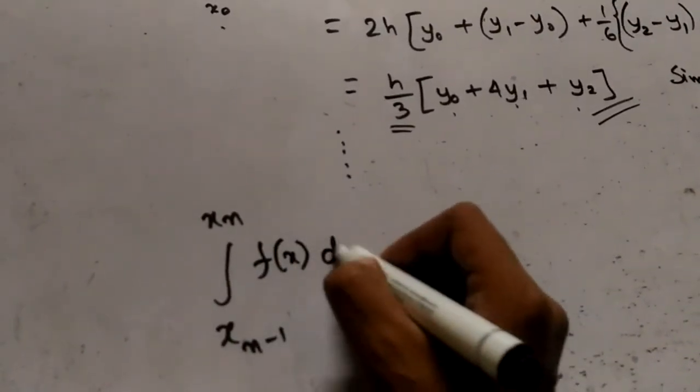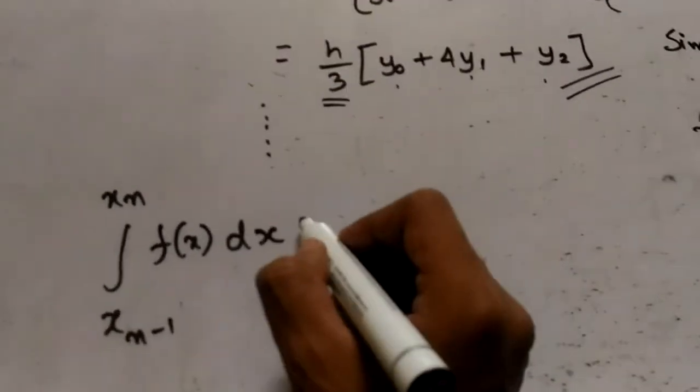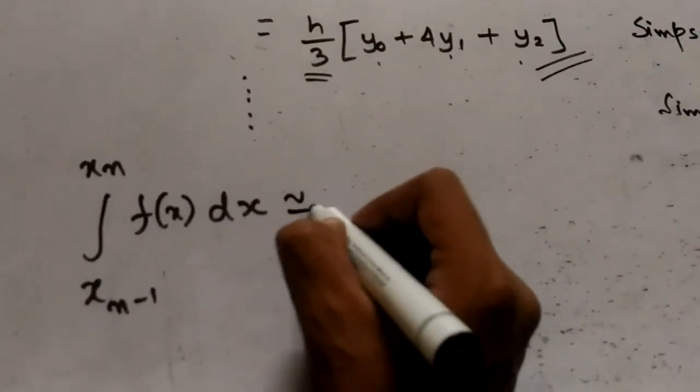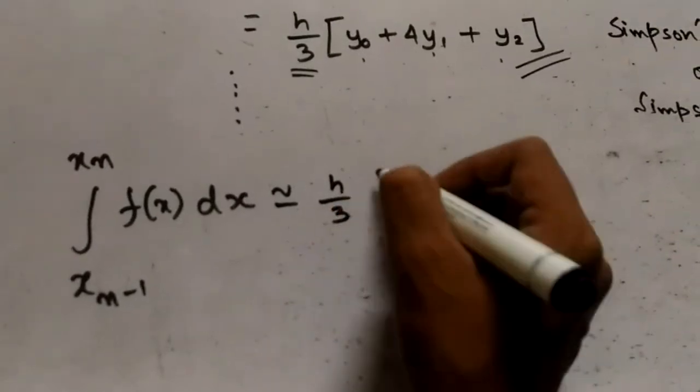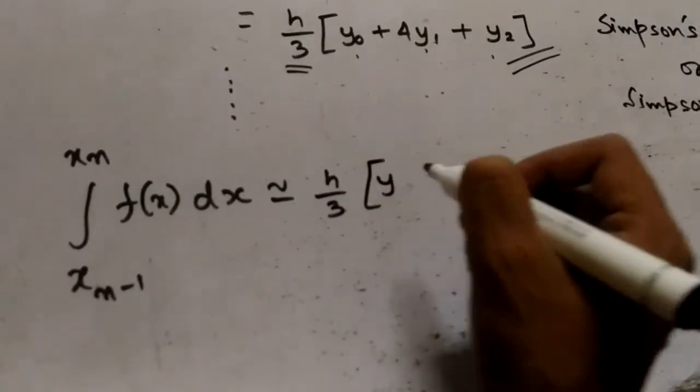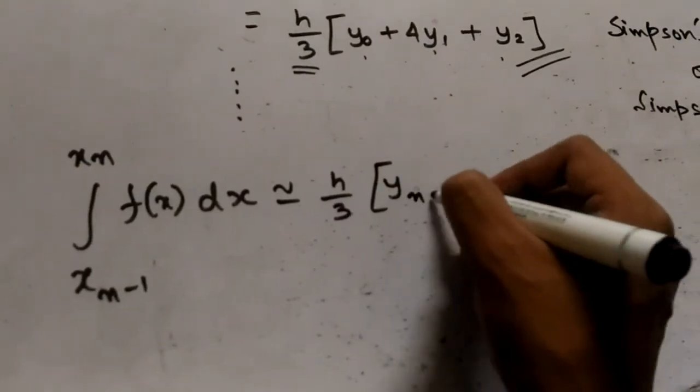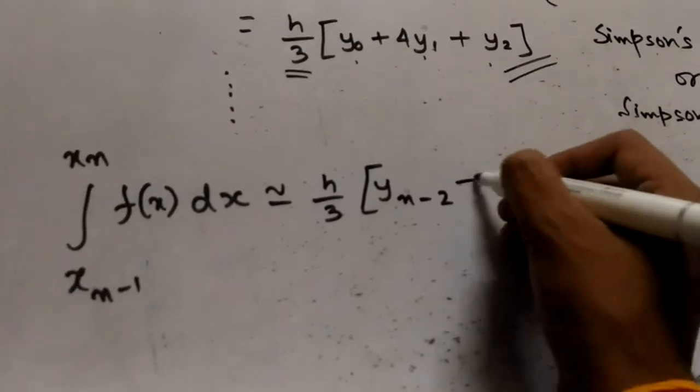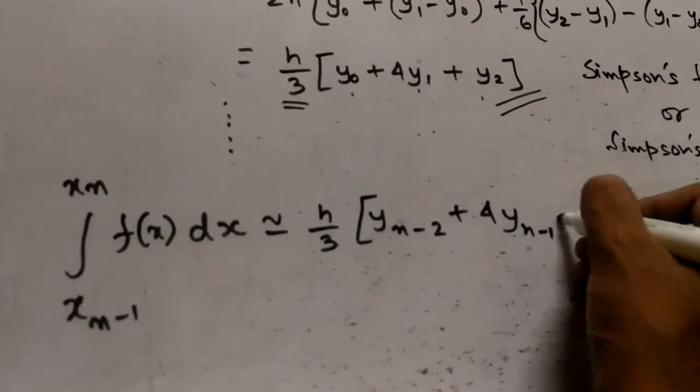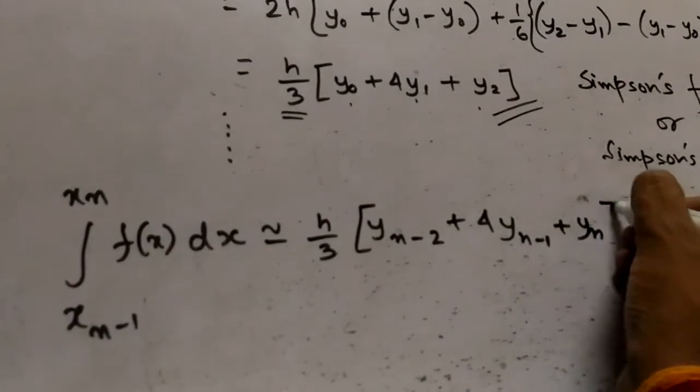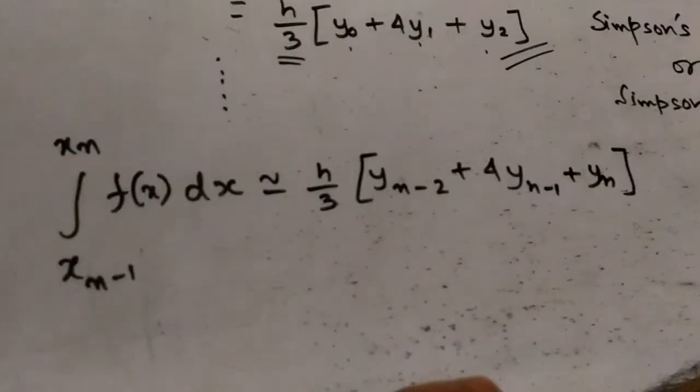The integral f(x)dx is approximately equal to h/3 times y1 to x3, yn-3, yn-2 plus 4yn-1 plus yn.